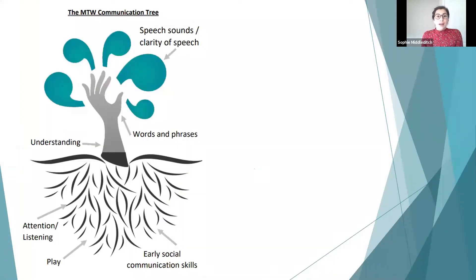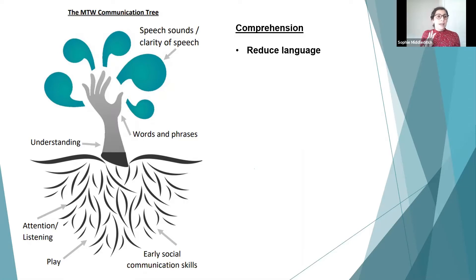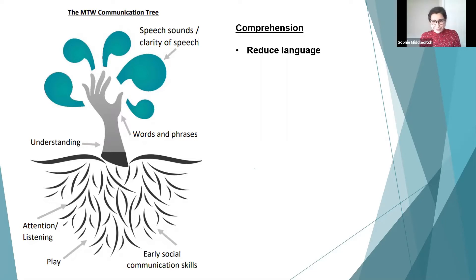Moving on to comprehension — understanding of language. It's really important to know a person's language level when talking to someone with autism. A speech therapist can assess where a child's understanding is at, because if a child understands two words, we should not be saying 'Go get your blue shoes and your book bag and your hat' — that's five words. We need to reduce our language to the right level. It's not just about the number of words either — there are other factors, including blank levels.